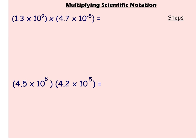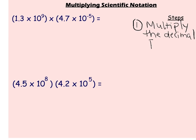When multiplying scientific notation, there will be three steps that you're going to do. The first step is to multiply the decimal parts — what I mean by the decimal parts is the first two numbers that are going to be in the scientific notation.